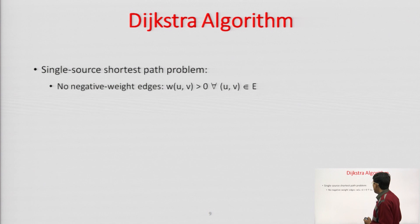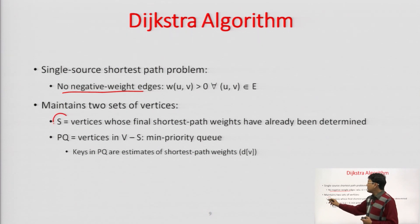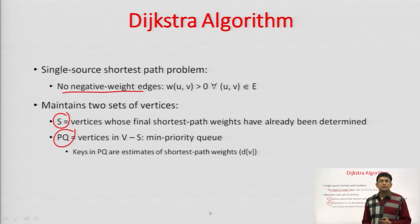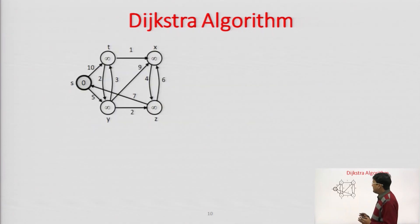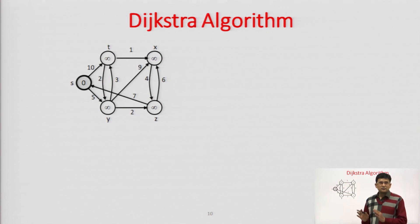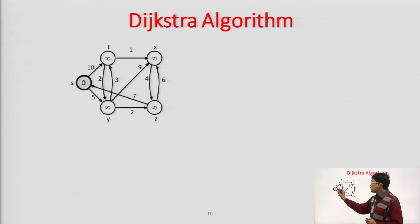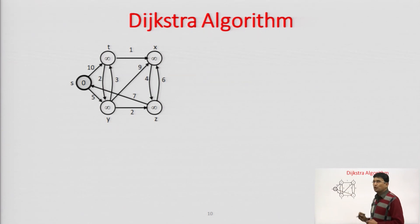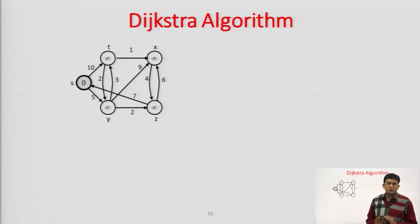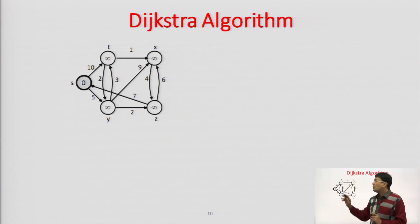How does Dijkstra's algorithm proceed? There are no negative weight edges and we maintain two sets — one is the set S of vertices, and PQ is the priority queue. In this graph, we have to find out the shortest path. We set the distance of source as 0. Inside the circles representing vertices, we put the distances. The distance of source to source is 0 and all other distances have been set to infinite, considering initially that all vertices are unapproachable from the source.